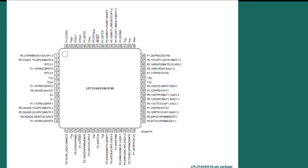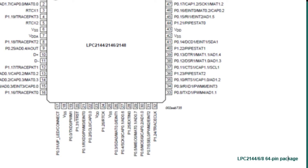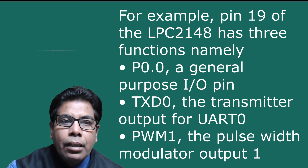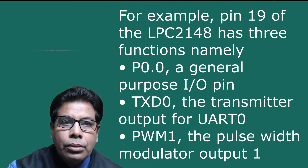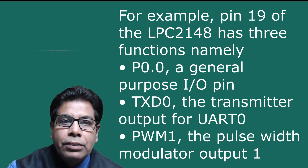Let us see the pin diagram. It is a 64-pin package — plastic low profile quad flat package, LQFP64 — which we have seen in detail in the last video. There are 64 pins and the functions of each pin are displayed against the pin number. For example, pin number 19 has three functions: P0.0 (general purpose IO), TXD0 (transmitter output for UART 0), and PWM1 (pulse width modulator output 1). The functionality of each pin can be selected using the pin function select registers.